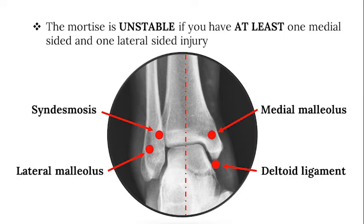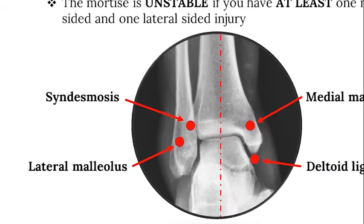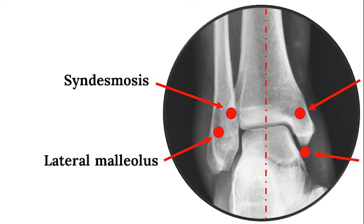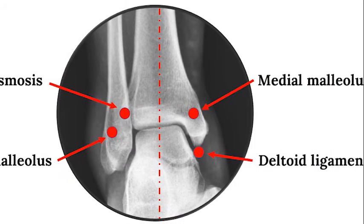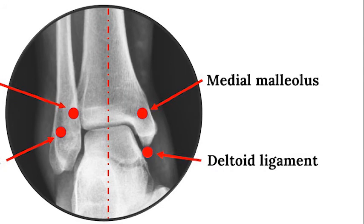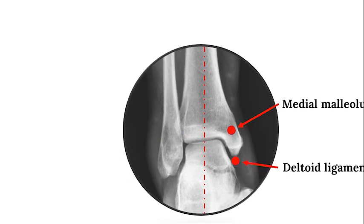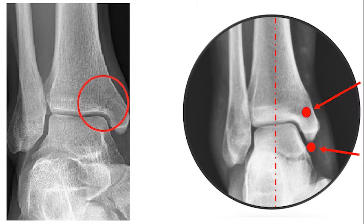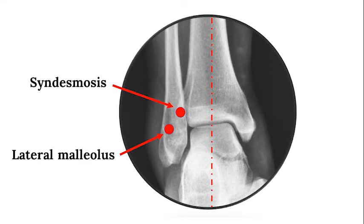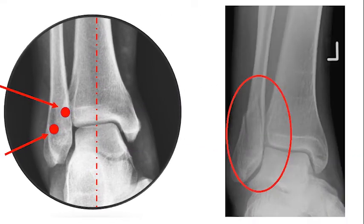The mortise is unstable if you have at least one injury to the inside of the ankle with an additional injury to the outside of the ankle. An injury to the syndesmosis or the lateral malleolus must be associated with an injury to the medial malleolus or the deltoid ligament. If only a medial-sided injury is present or only a lateral-sided injury is present, these are typically stable injuries that can be treated without surgery.